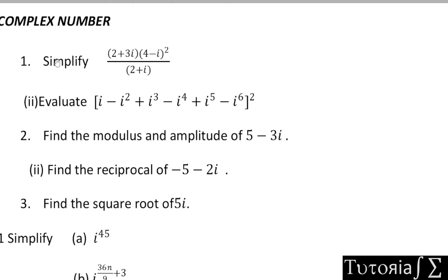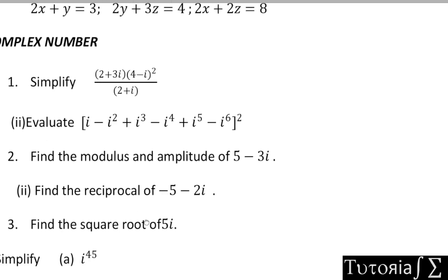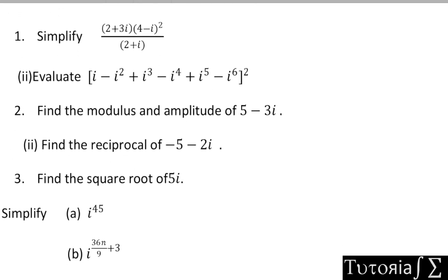We'll be simplifying complex numbers, and the only two odd ones out are finding the reciprocal and finding the square root or the fifth root. So we'll look at how to find the square root, the fourth root, the fifth root, and so on and so forth. Hopefully this video won't be too long — this is basically our focus, then we'll move on from there.